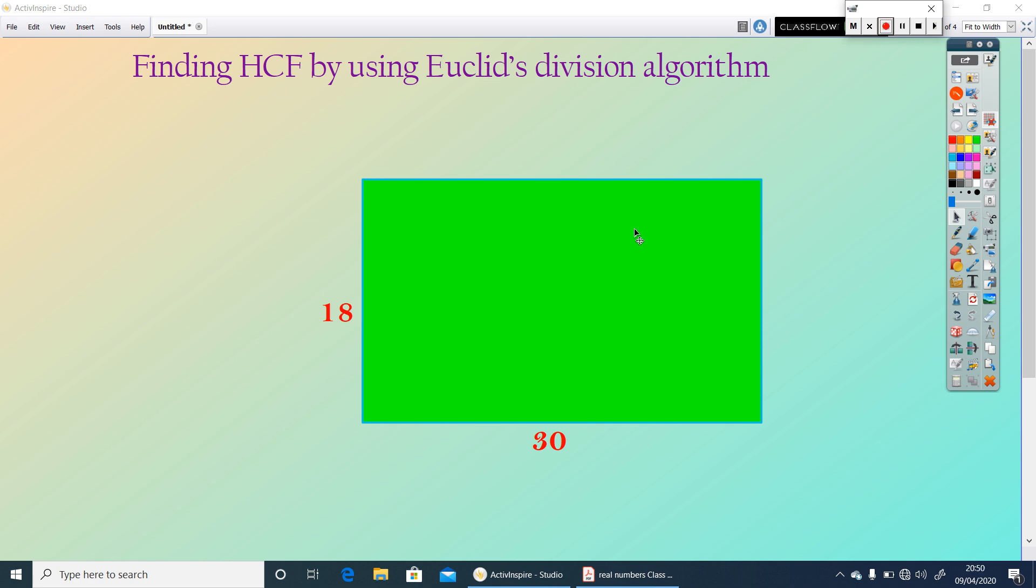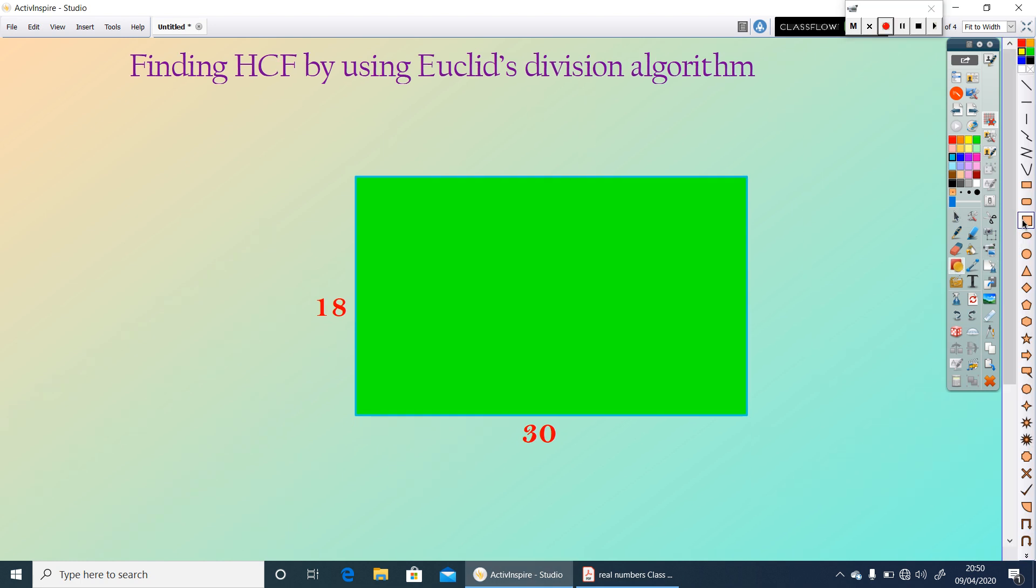You have to tile this floor of the hall with square tiles. You have to choose the tile with a maximum size. Let me fill this by a square tile of 18 meter. It is a square tile of 18 meter. This rectangular portion is remaining. We cannot fill this by 18 meter square tile.